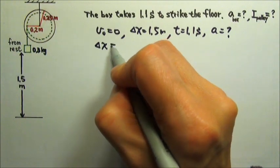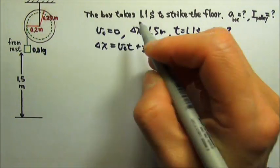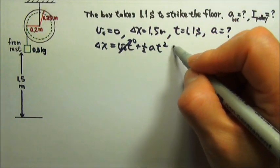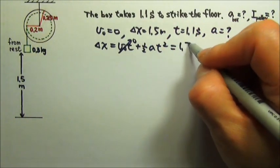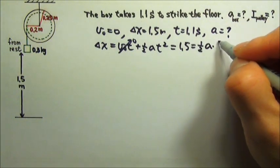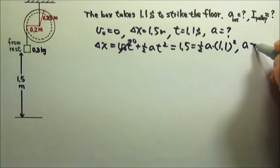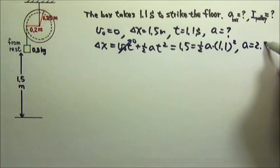It's the Δx = v₀t + ½at². The v₀ is zero, so Δx = 1.5 equals ½a times t². So we'll find the acceleration to be 2.48 meters per second squared.